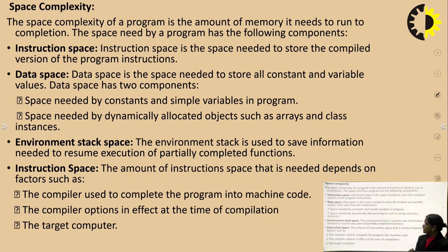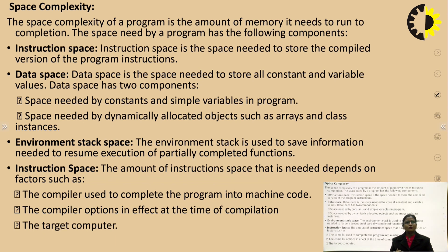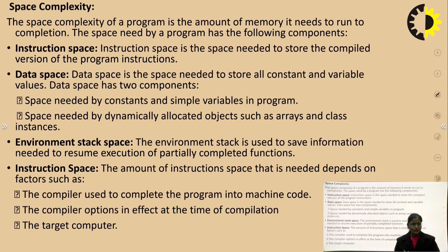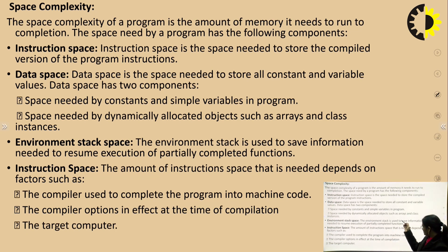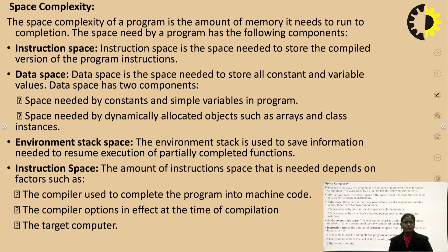Second is the data space — the space needed to store all constants and variables used in the program. Data space has two components: first, the space needed by constants and simple variables; and second, the space needed by dynamically allocated objects such as arrays and classes.